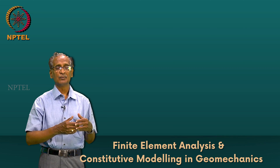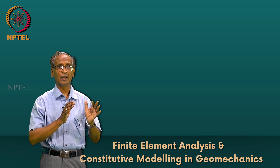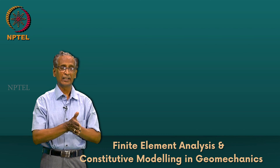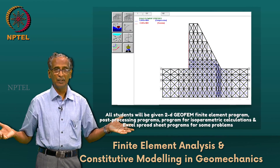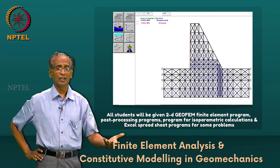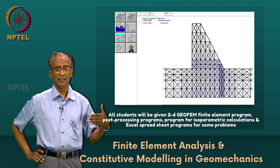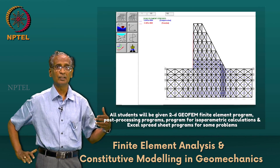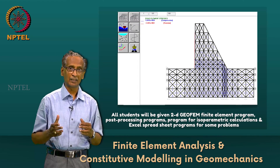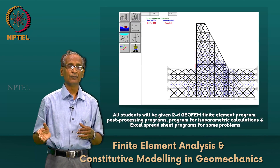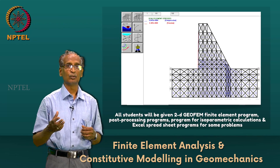Joints — like rock joints — are situations where one part of the medium moves against the other part. Then there is the semi-infinite nature of the soil, which we model analytically by considering integrals from minus infinity to plus infinity. We will be able to address this through special types of finite elements called infinite elements. I will be introducing all these concepts in this course.